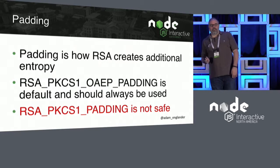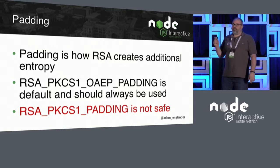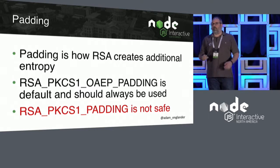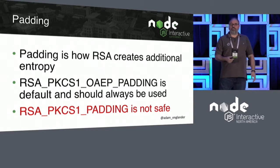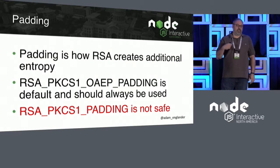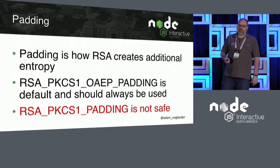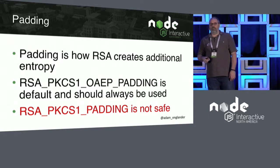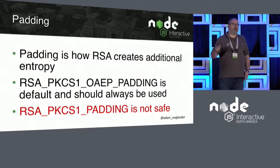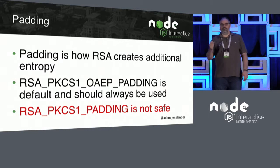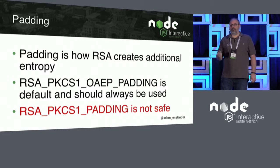Padding in RSA is how it creates entropy, so it's important to use a good padding scheme. For RSA, it's crucial. PKCS1 padding is not safe — do not use it. Use OAEP, which is defined in the crypto library as RSA_PKCS1_OAEP_PADDING. Make sure you're using OAEP padding; otherwise it is not safe.